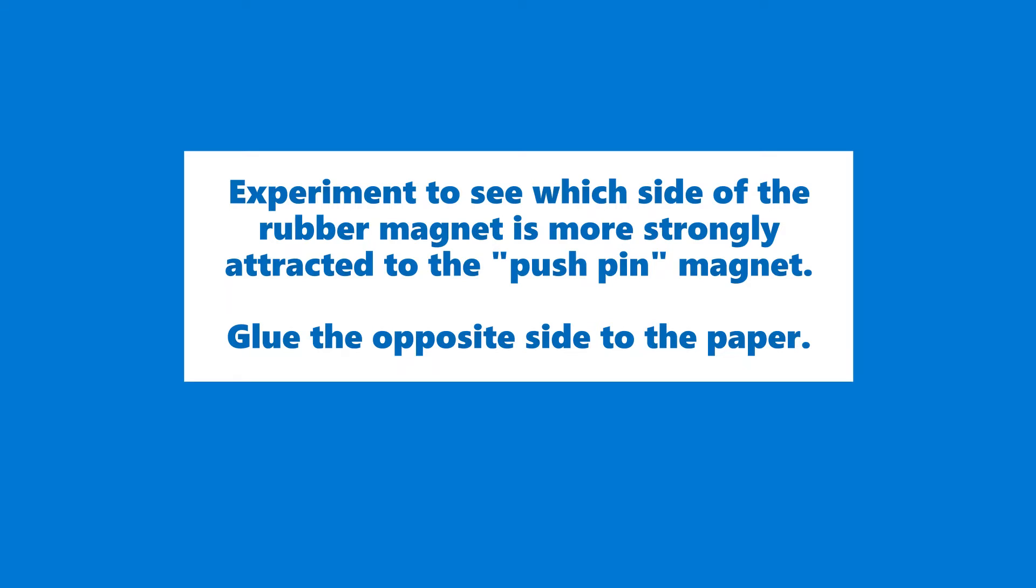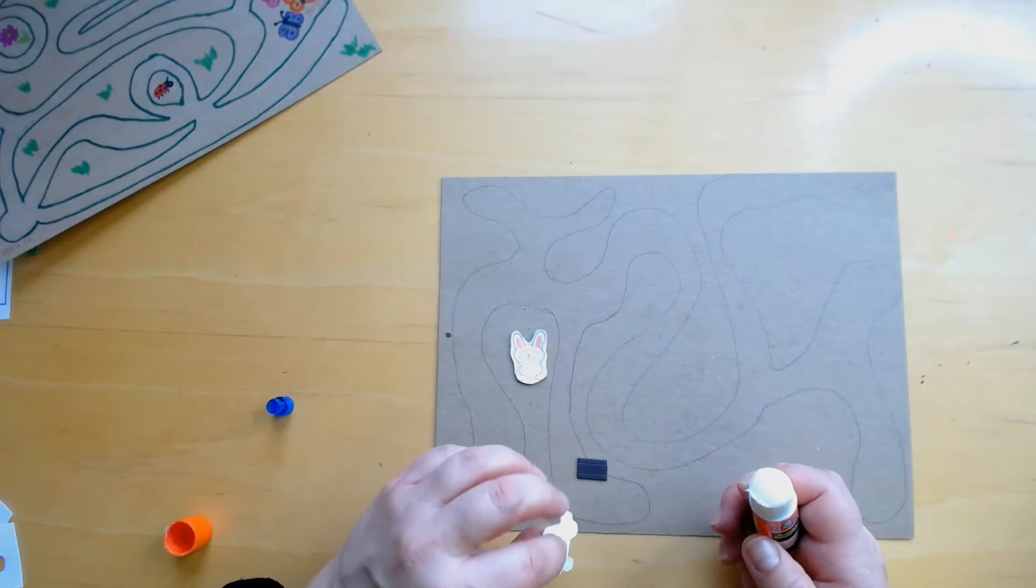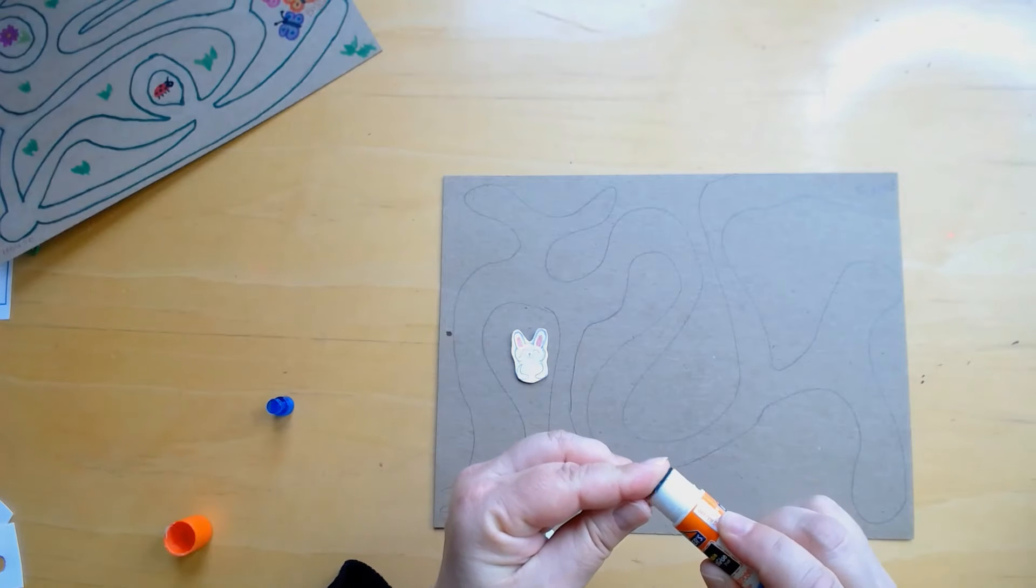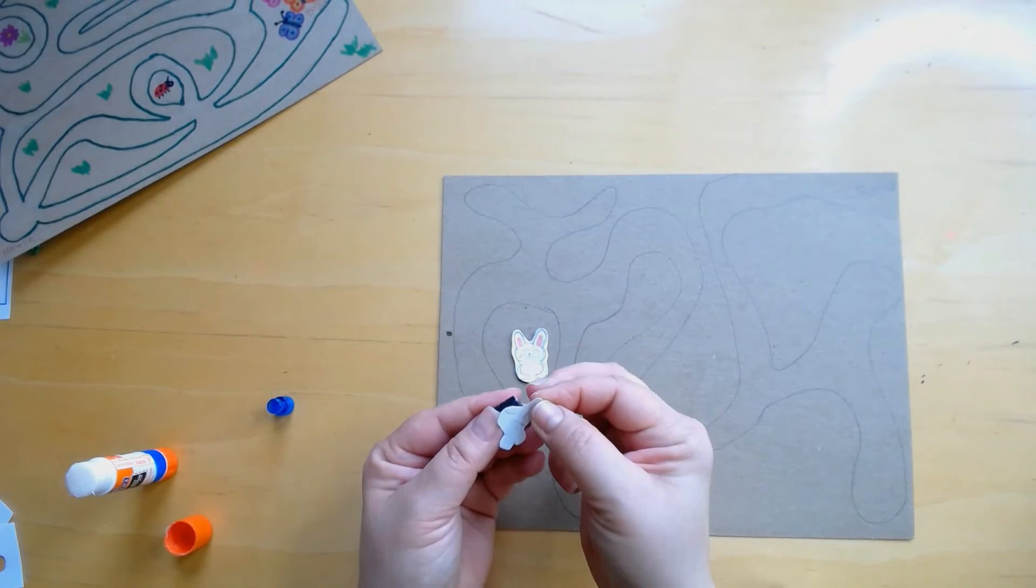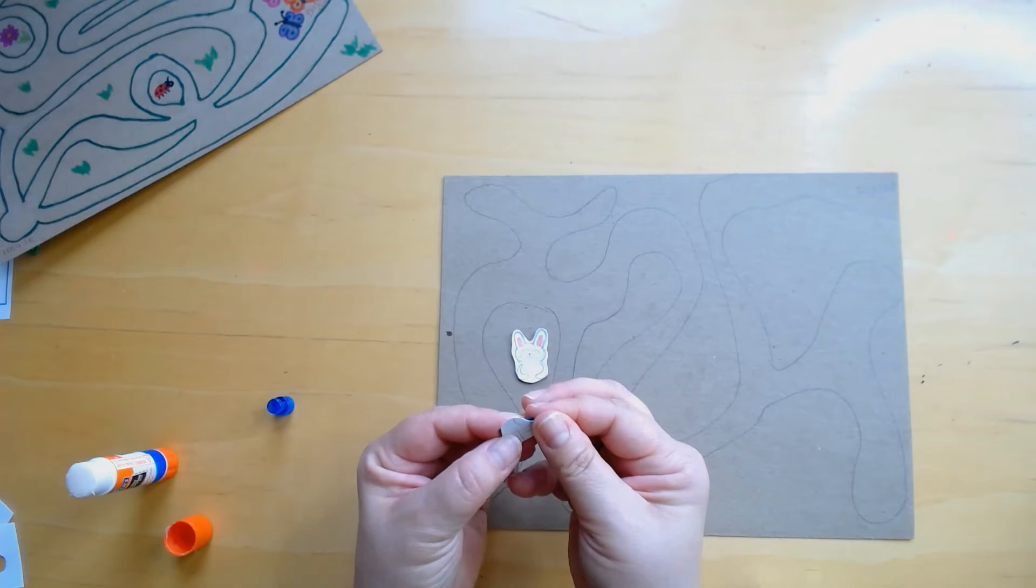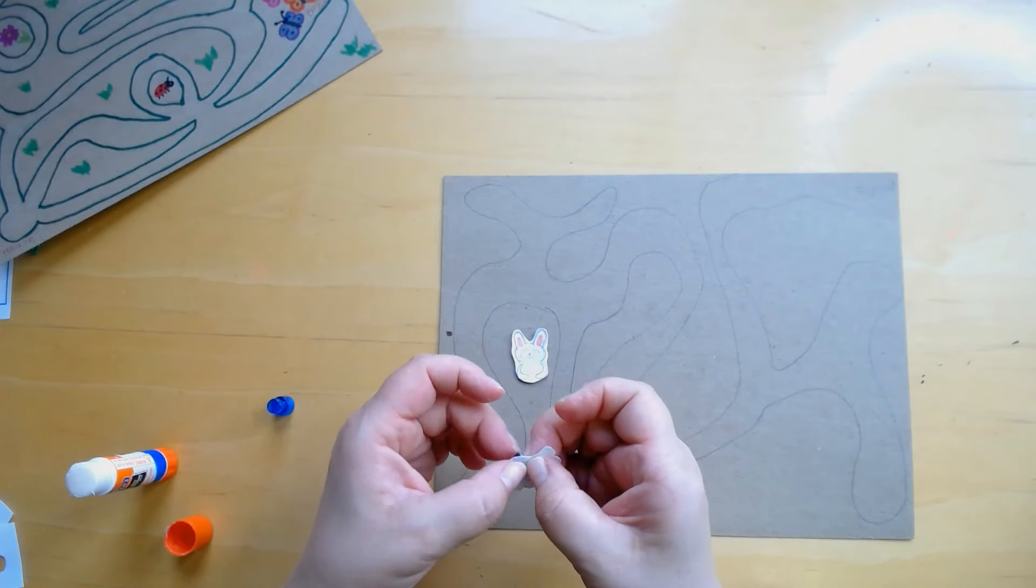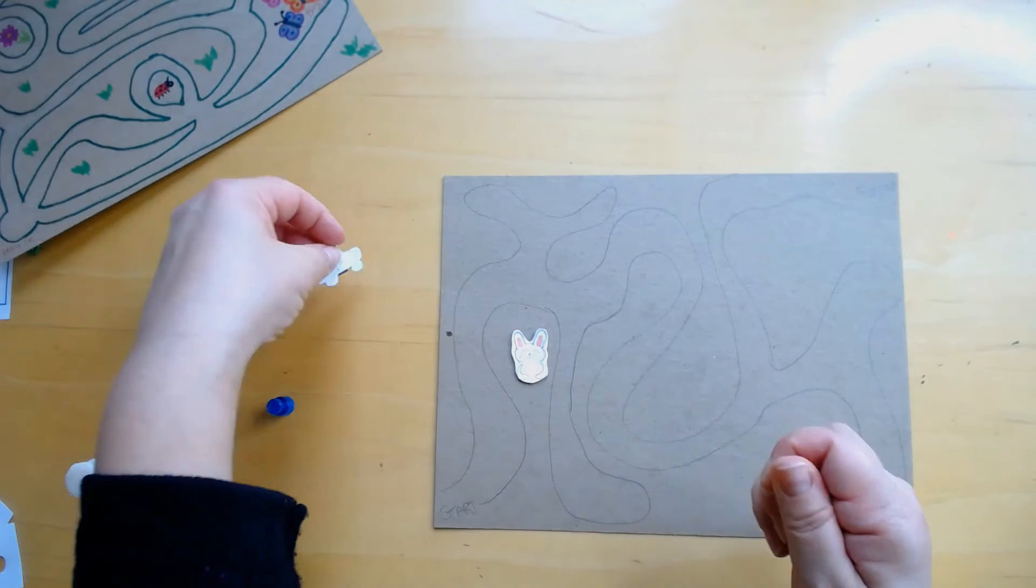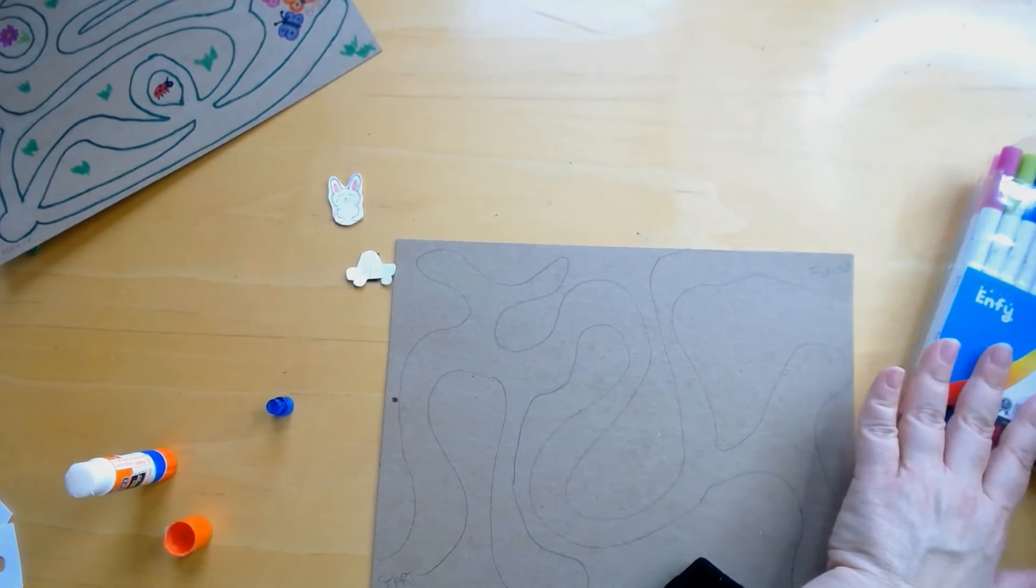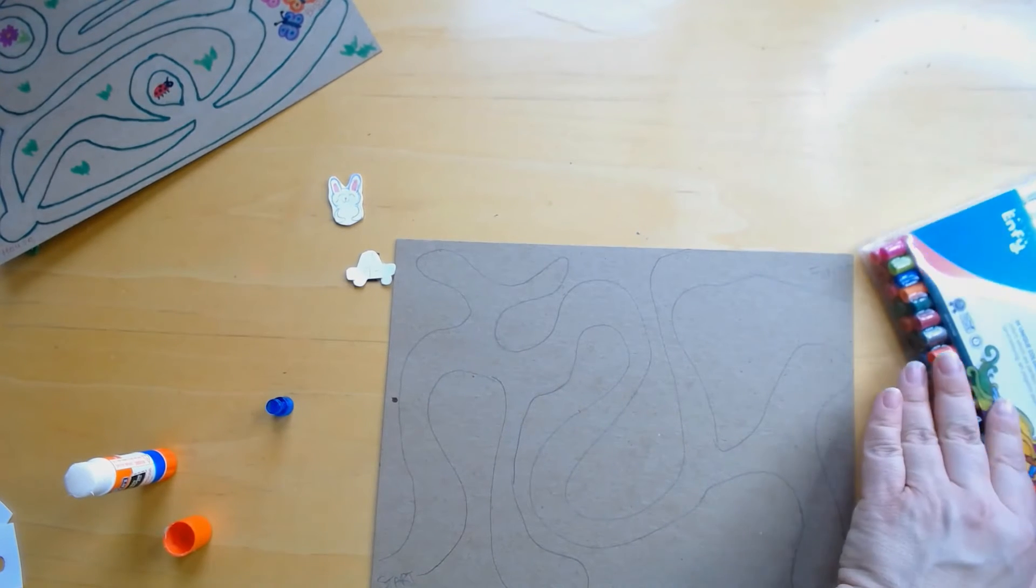Experiment to see which side of the rubber magnet is more strongly attracted to the pushpin magnet, then glue the opposite side to the paper. I'm going to put glue on my magnet, glue this on the way it best fits. So I'm going to put that aside. I'm going to take my markers now and just go ahead and design my road.